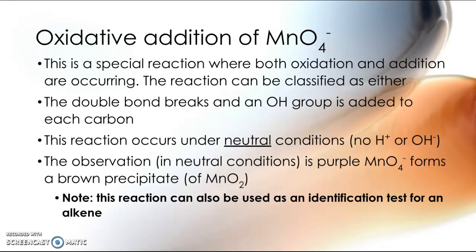So no acidification or basic conditions. So in these neutral conditions, what we see is that the purple permanganate forms a brown precipitate of manganese dioxide, MnO2. And this reaction can also be used as an identification test for an alkene.